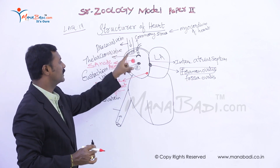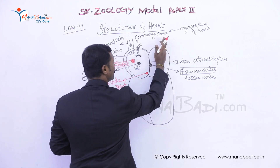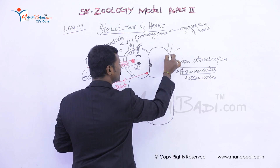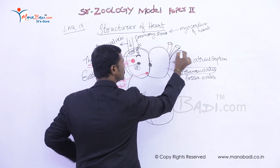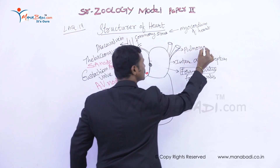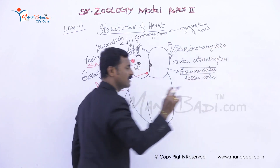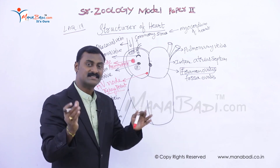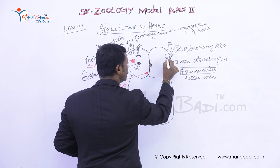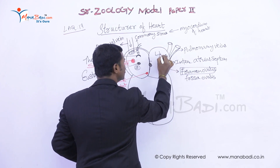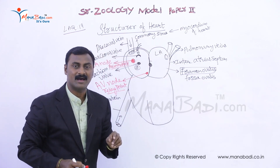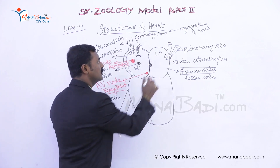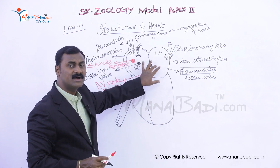Coming to the left atria — in this chamber, there are two pairs of pulmonary veins: two coming from the left lung and two from the right lung, totaling four. They open independently or together into the left atria, directly pouring oxygenated blood into it through the pulmonary veins.